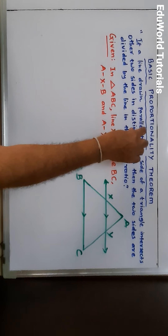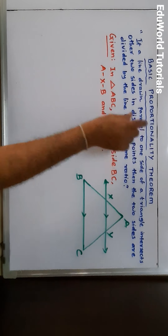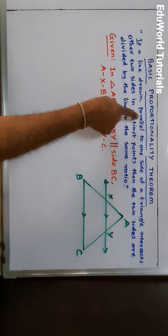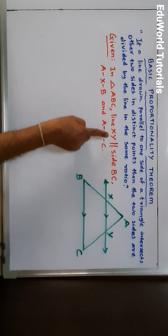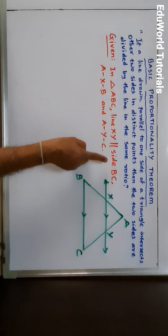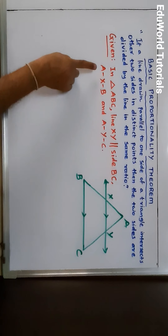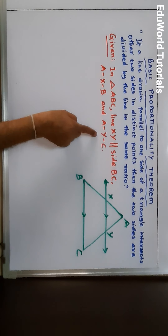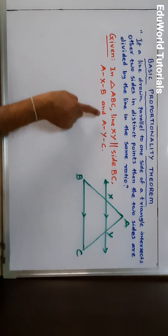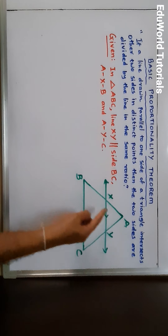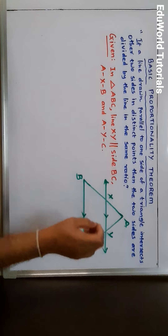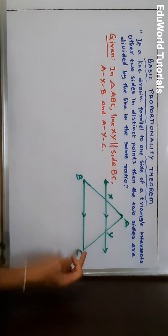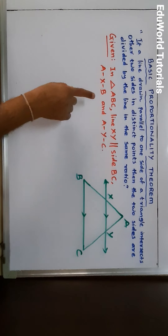Antecedent stands for 'given.' So I have written: in triangle ABC, line XY is parallel to side BC, such that point X and Y lie on sides AB and AC respectively. You are seeing A-X-B betweenness and A-Y-C betweenness. This is the given.